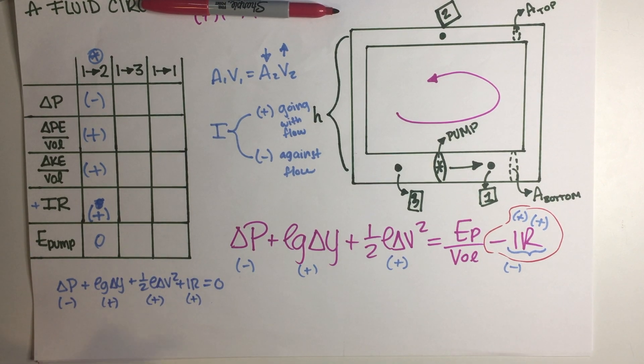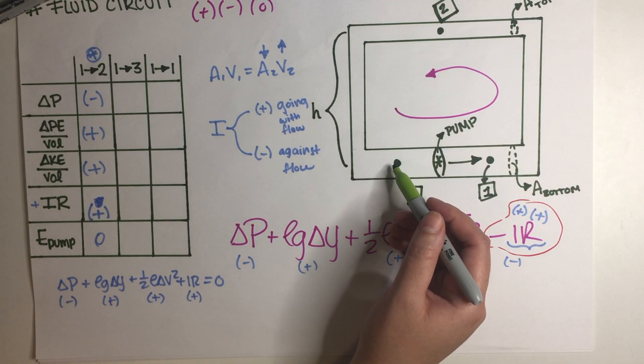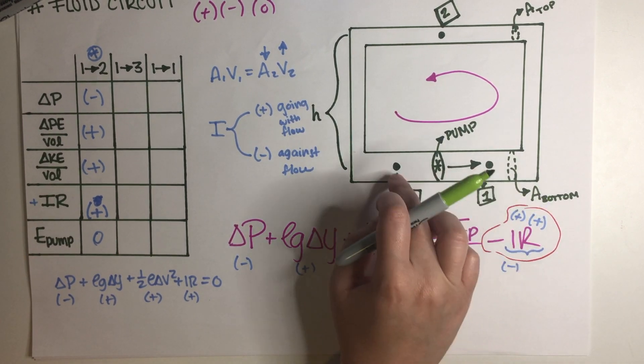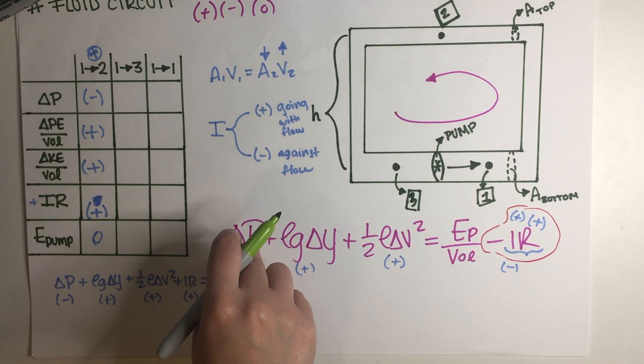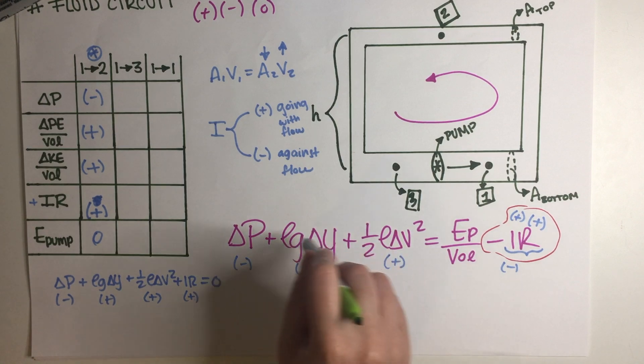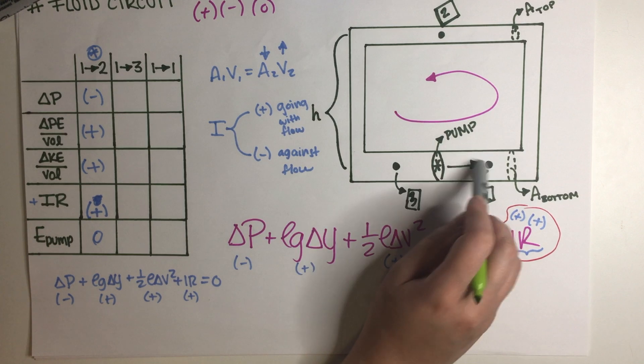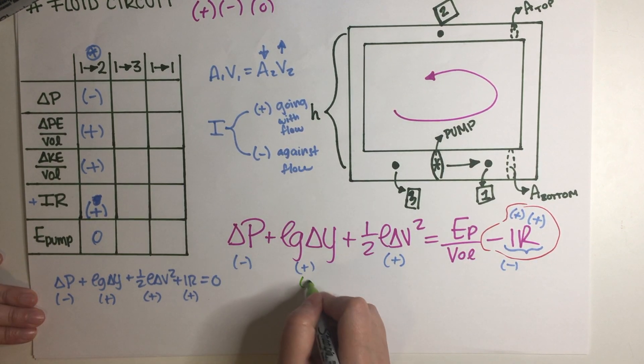All right so let's just go ahead and do the next one. So starting at one and ending up at point number three, so starting over here and then just going around like this, ending up at point number three. So if we start at one and end up at three, delta P is still going to show up, I can't just cancel that out.